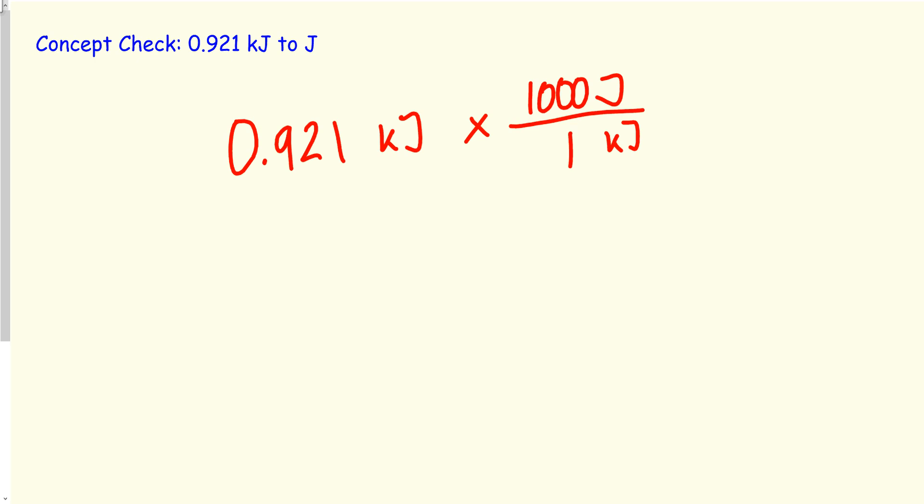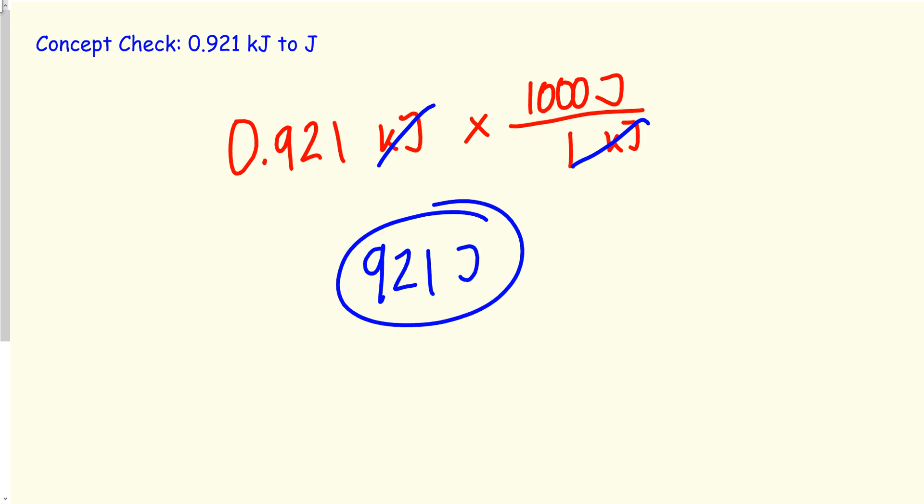Let's do one last question. Pause the video and try to solve it yourself, then check your answer with mine. I got 0.921 kilojoules times 1,000 joules over 1 kilojoule. Kilojoule and kilojoule cancel out, so 0.921 times 1,000 — use your calculator if unsure how to move the decimal. The answer is 921 joules.